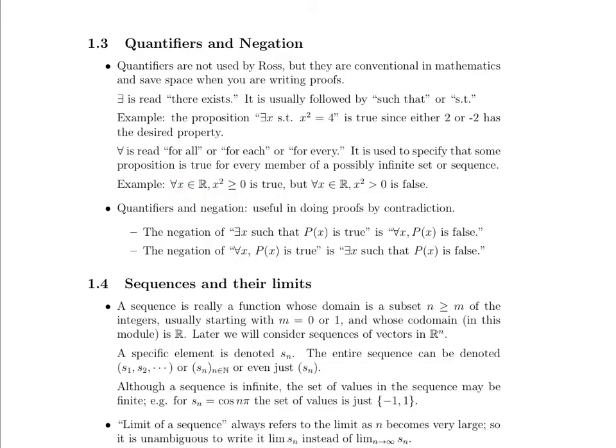Here's an example where we say for all x in the real numbers, x squared is greater than or equal to 0. That's true. But for all x in the real numbers, x squared is greater than 0 is false because x could be equal to 0.